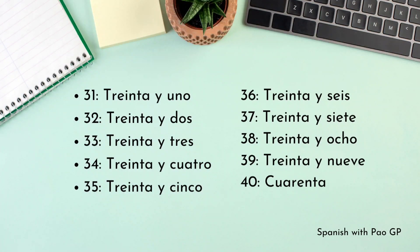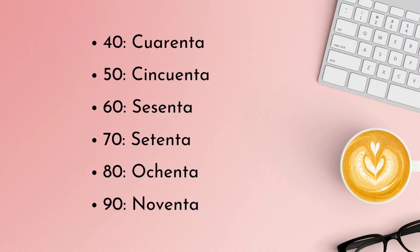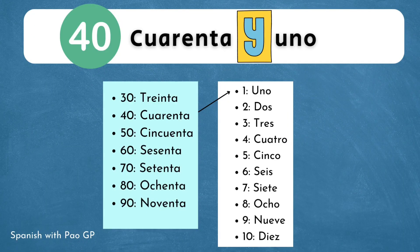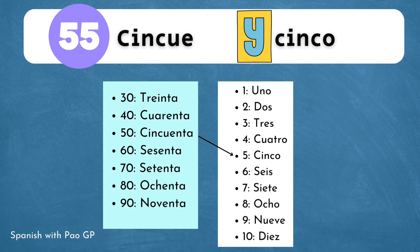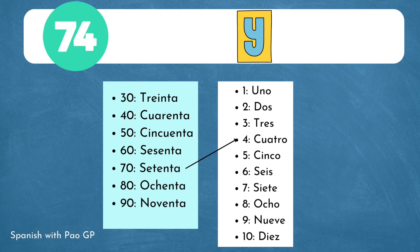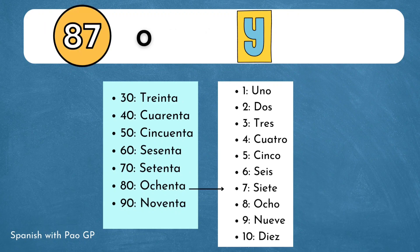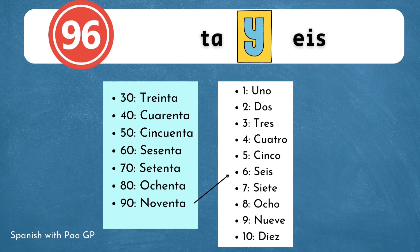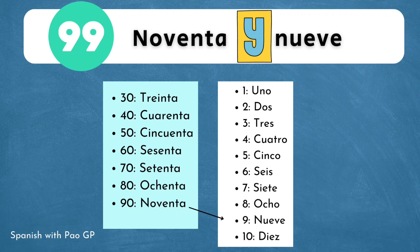Y así sucesivamente hasta llegar a números más grandes. Ahora conoce los números del cuarenta hasta el noventa y nueve que tienen la misma estructura del treinta. Cuarenta, cincuenta, sesenta, setenta, ochenta y noventa. Como en el ejemplo: cuarenta y uno, cincuenta y cinco, sesenta y uno, setenta y cuatro, ochenta y siete, noventa y seis y noventa y nueve. Como ves, tienen la misma estructura.